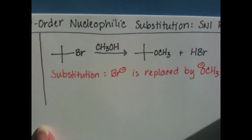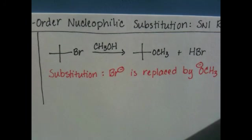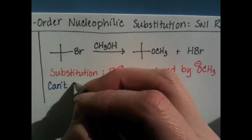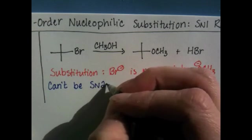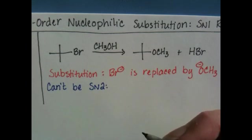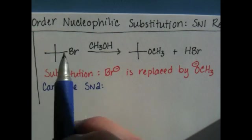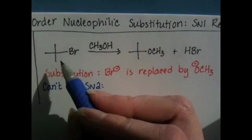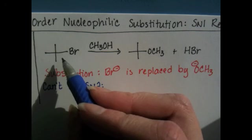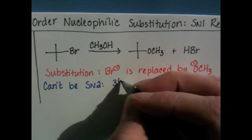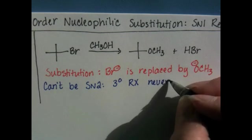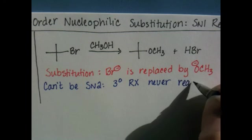But we also know that this substitution reaction can't be an SN2 reaction for two reasons. If we remember back to what you learned about the SN2 mechanism, there's two reasons that this reaction would never take place by SN2. One of them is because the substrate is a tertiary alkyl halide. Tertiary alkyl halides, you learned, never, essentially never react by SN2.